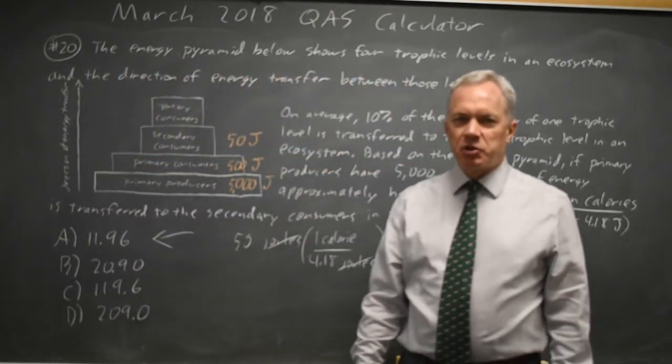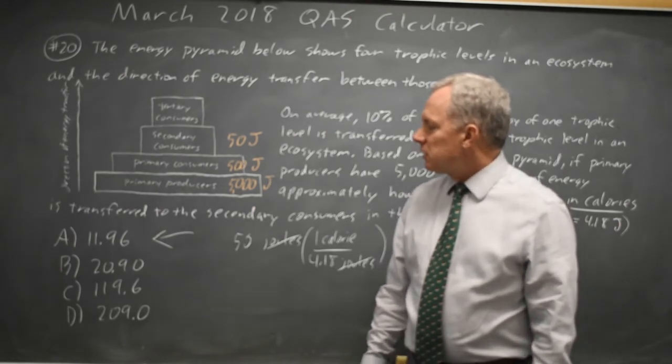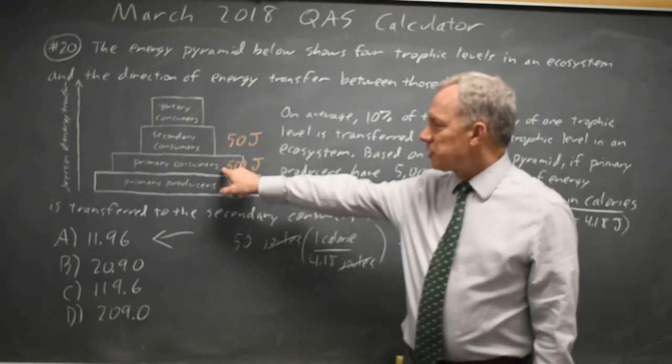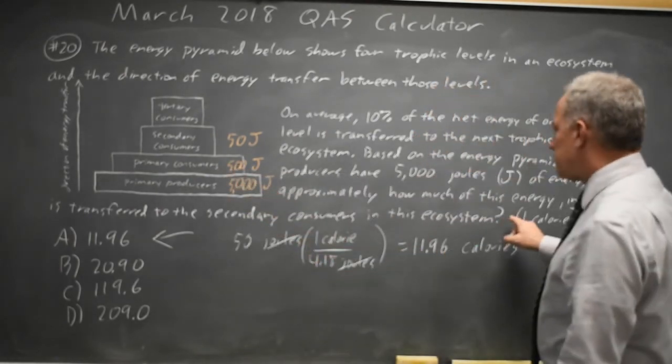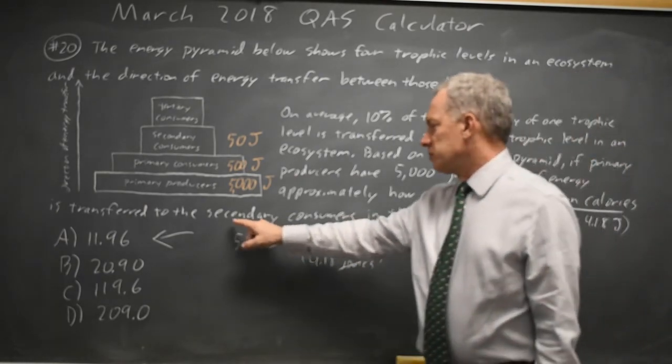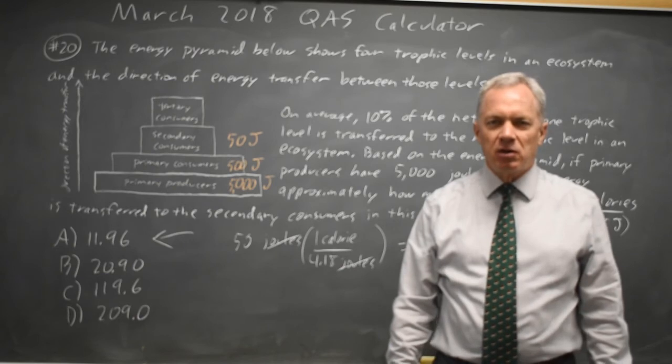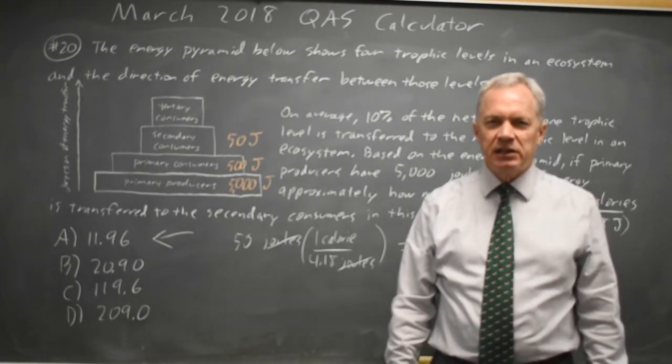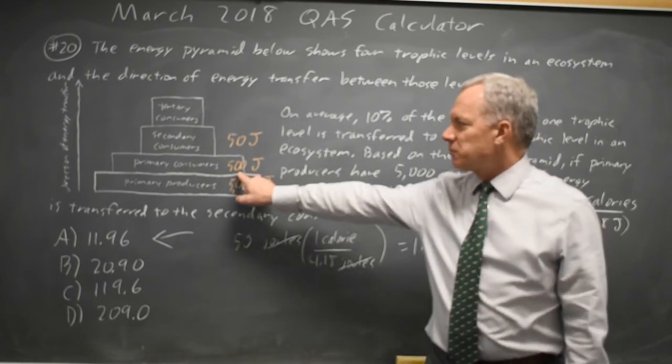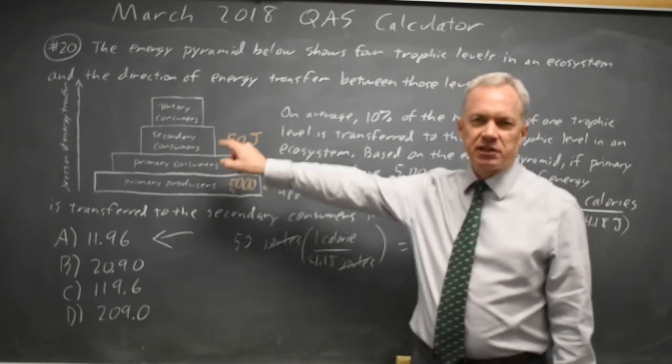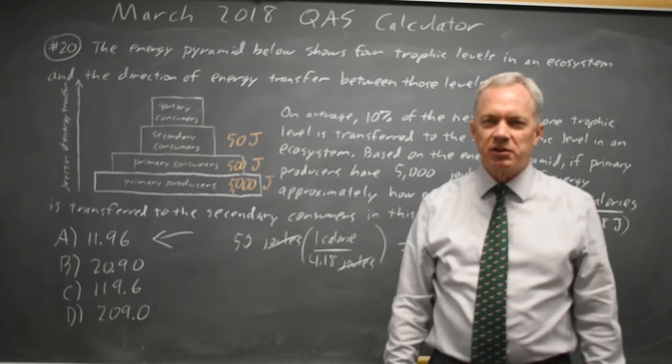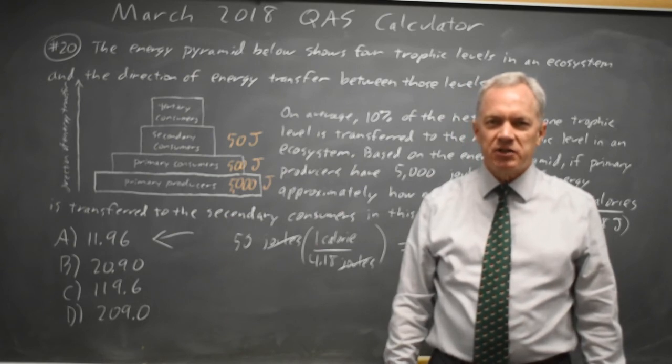College Board gives us an opportunity to stop at primary consumers, even though the question asks for secondary consumers. They're testing your reading skills as much as your math skills. Always reread the question to make sure you're answering what they're asking and not stopping at primary consumers or continuing to tertiary consumers, both of which would be incorrect. Come back soon for my next video. With math, there's always more.